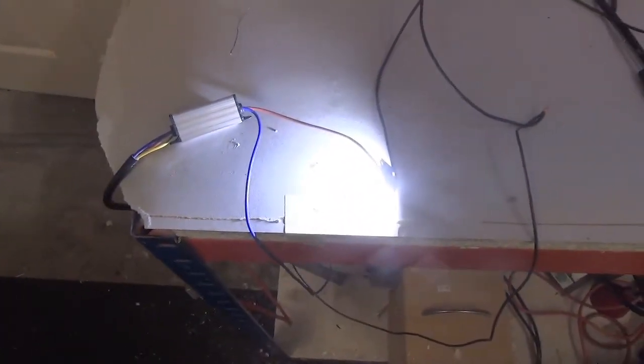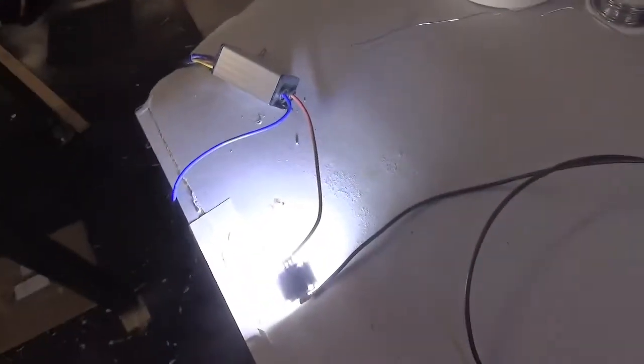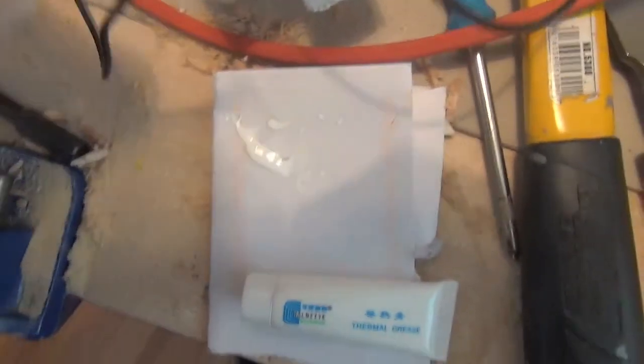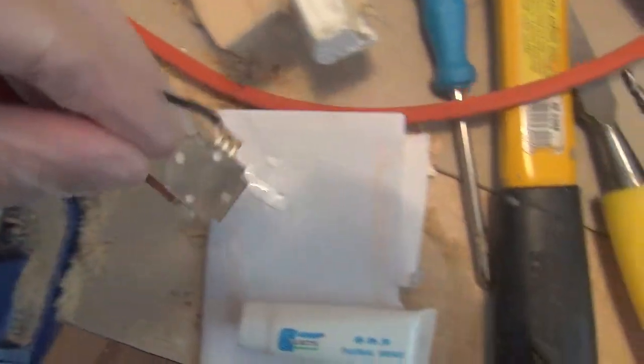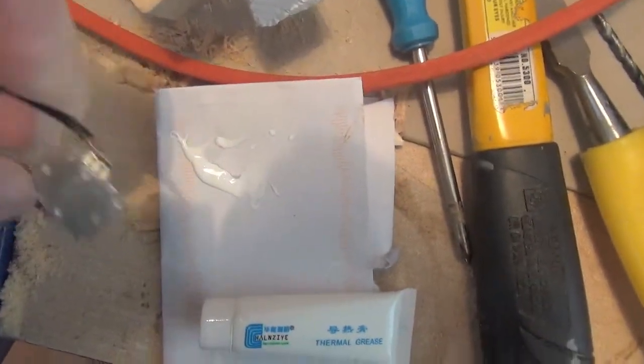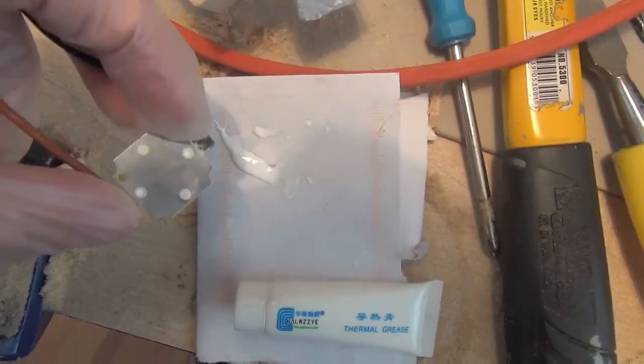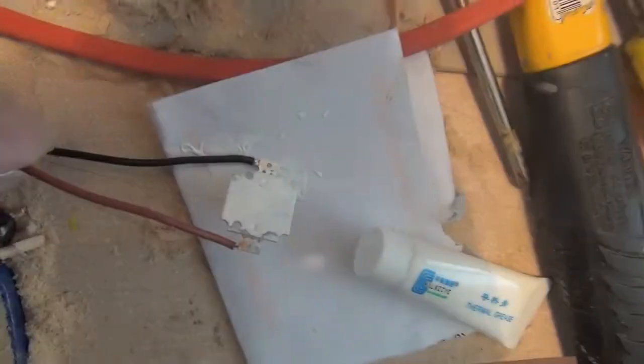Now I need to add the thermal paste and put it onto the heat sink. Shouldn't be doing this on the bench with sawdust but I'm doing something else at night. So anyway, now time to smear that on there. And that's done.